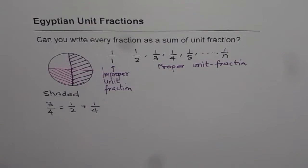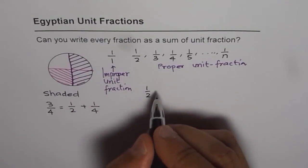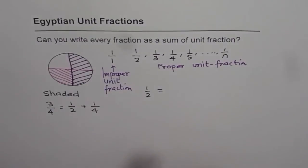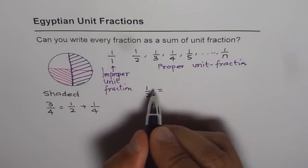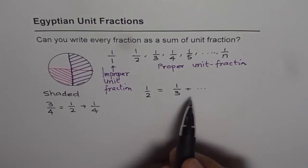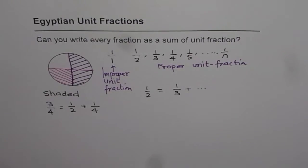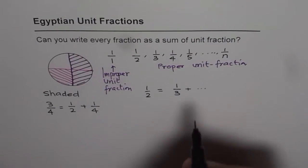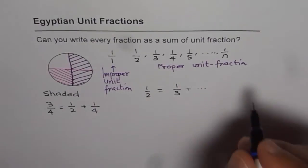Now let's explore: can we write a given fraction as a sum of unit fractions? For example, can we write one-half as a combination of unit fractions — something like one-third plus something else? The number lower than one-half is one-third, so it could be one-third plus something. If that something could itself be a unit fraction, let's try. That number, if it exists, should be one-half minus one-third.